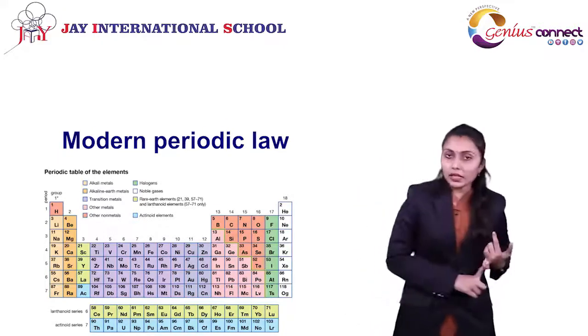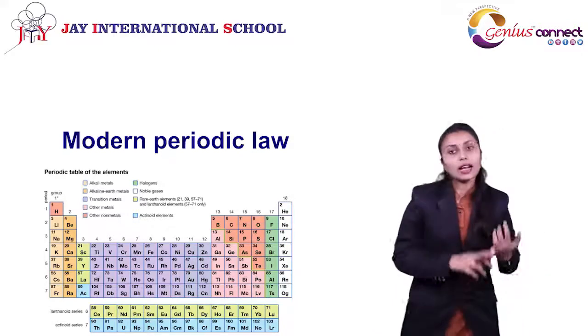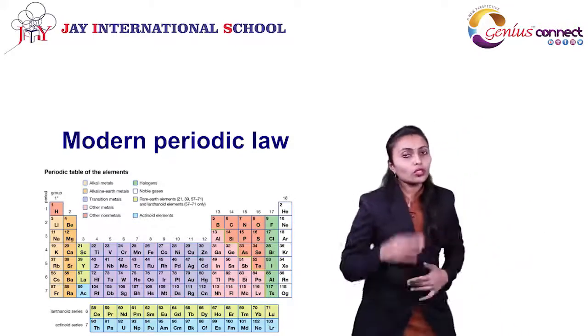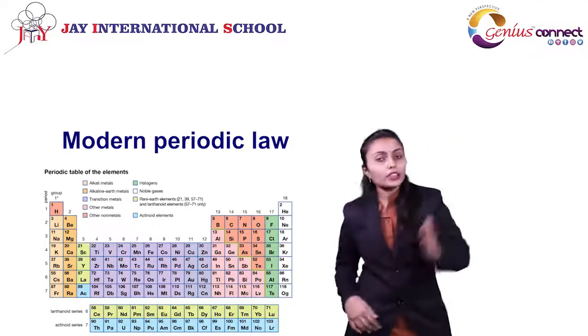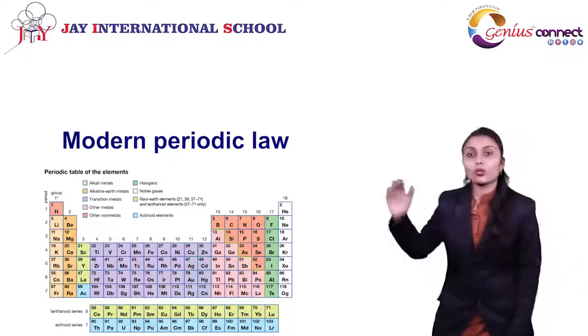It states that the properties of all elements are periodic functions of their atomic number. What is the meaning of that? Elements are arranged according to their atomic number.